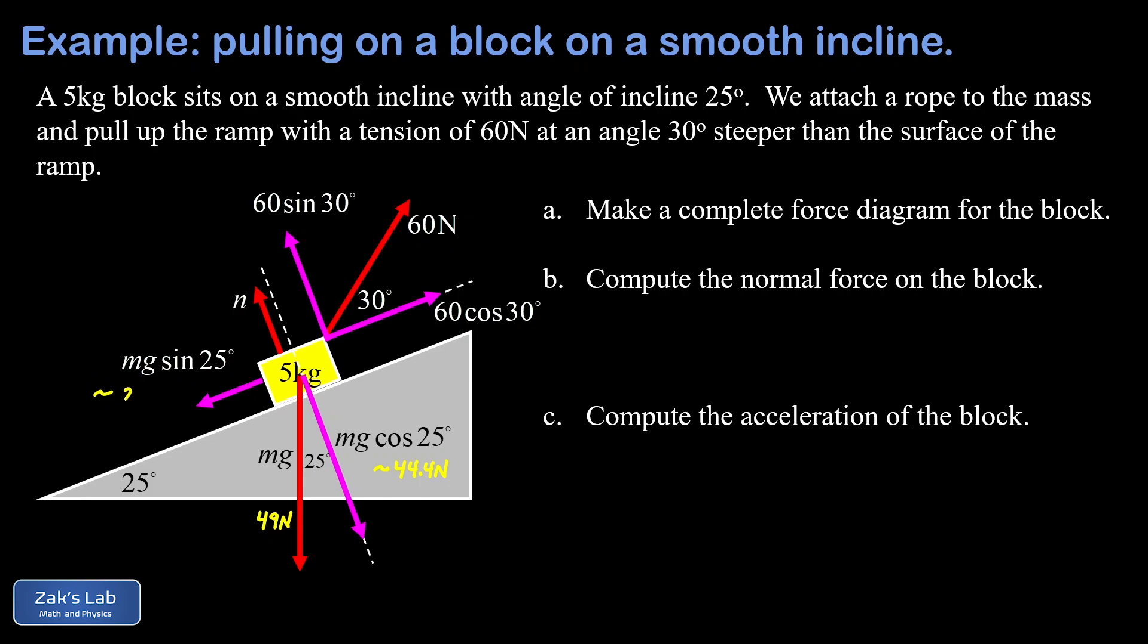Our mg sine 25, that's 49 sine 25, comes out to about 20.7 newtons. Moving over to our applied force, I have 60 cosine 30 for the parallel component, and that comes out to about 52.0 newtons. And our perpendicular component is 60 sine 30, which gives us exactly 30 newtons. The normal force is an unknown here.